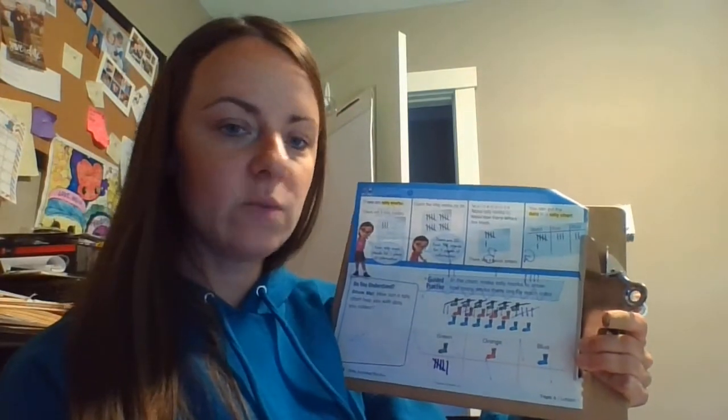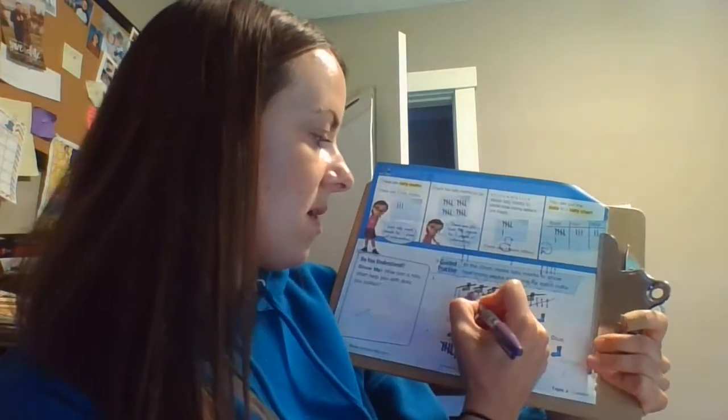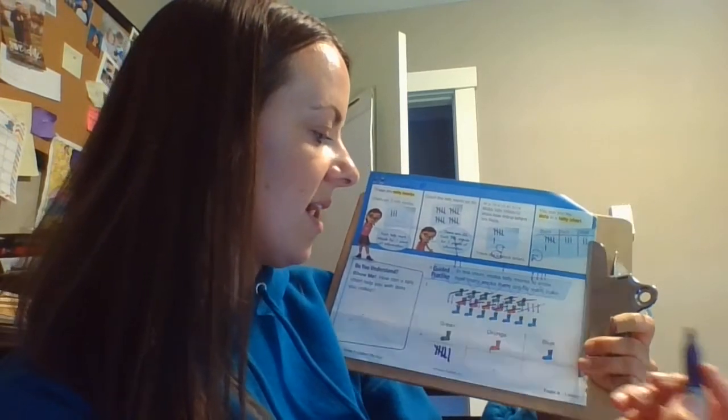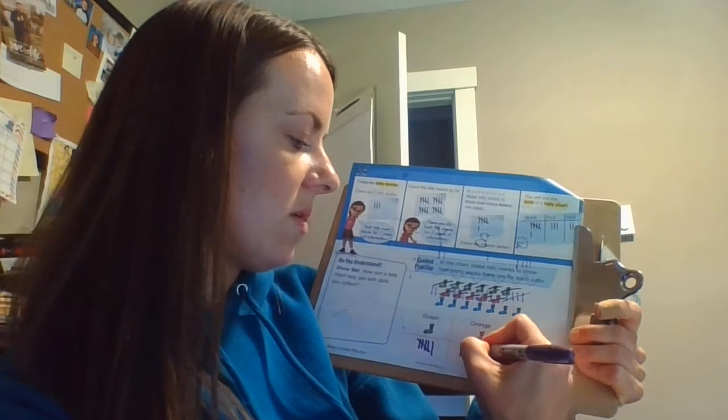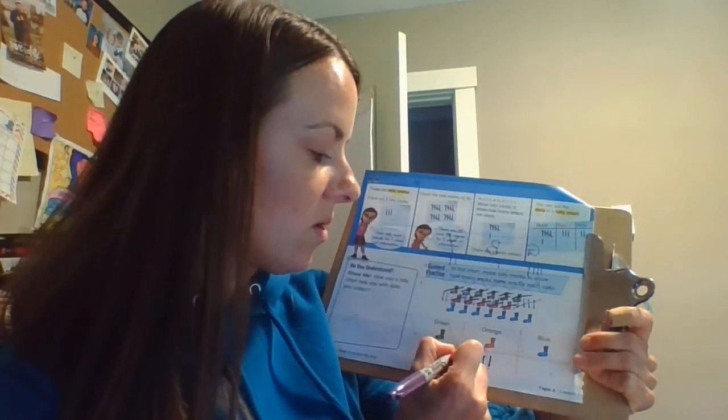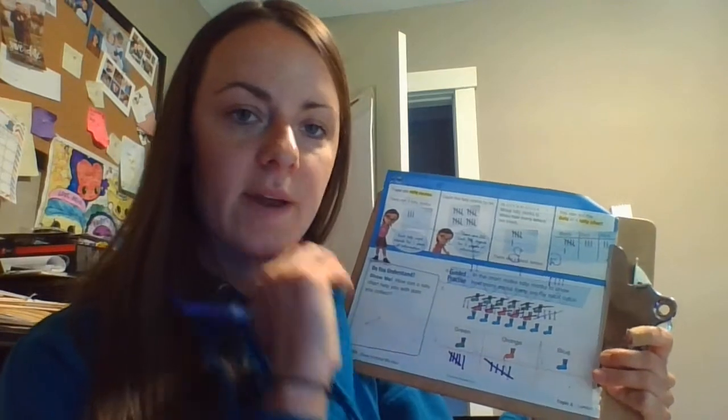Alright, the next one, let's see how many orange socks they have. Alright, one, two, three, four, five. So we do one, two, three, four, and then on the fifth one, we make the line cross that way.